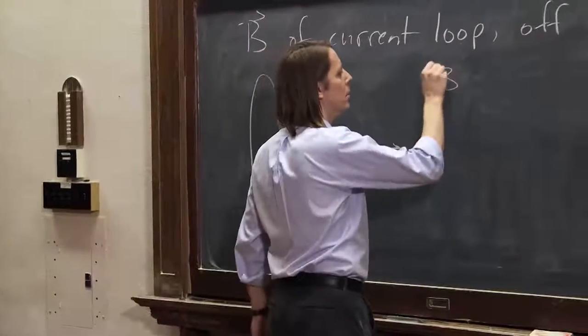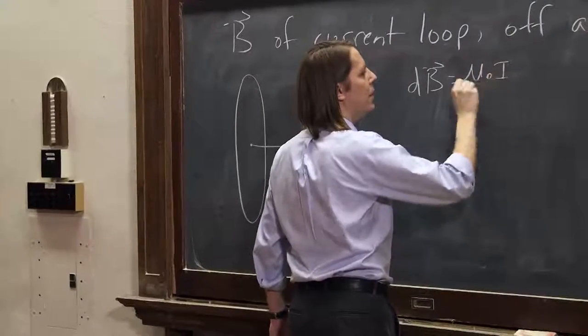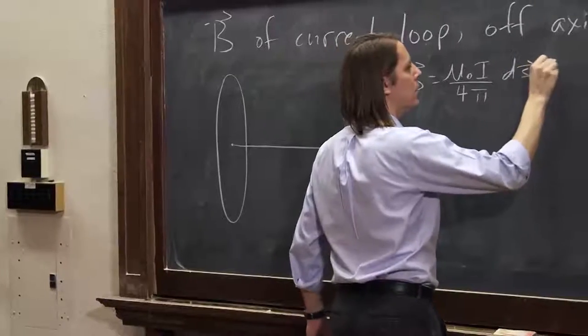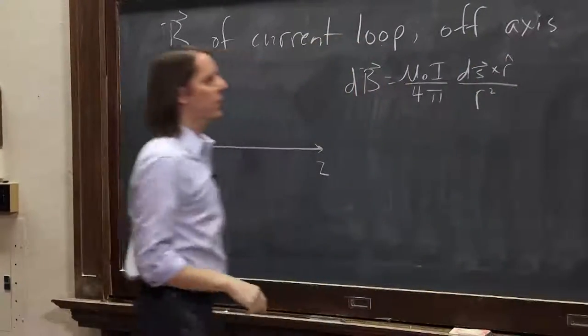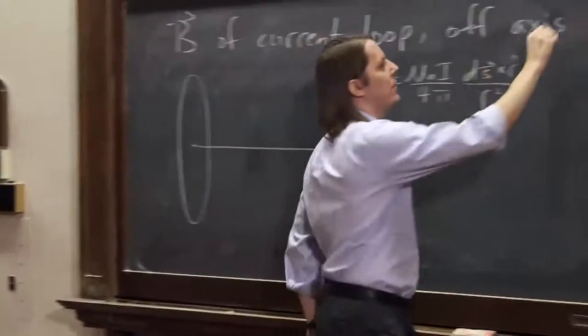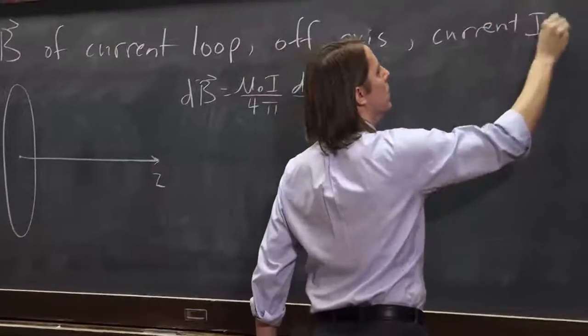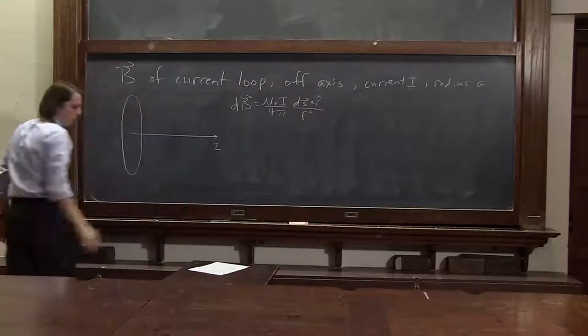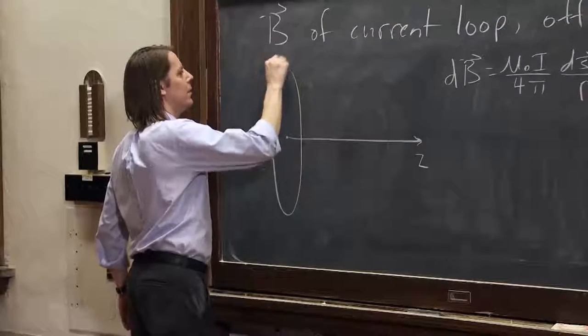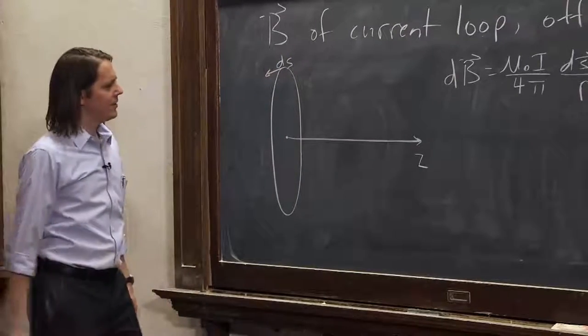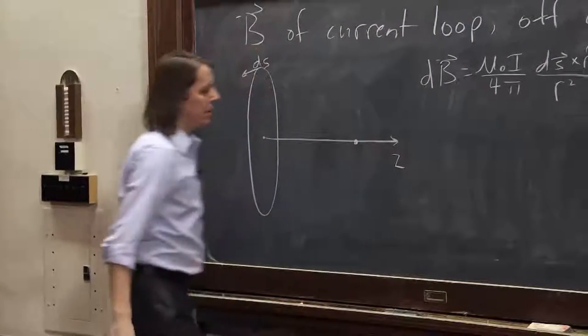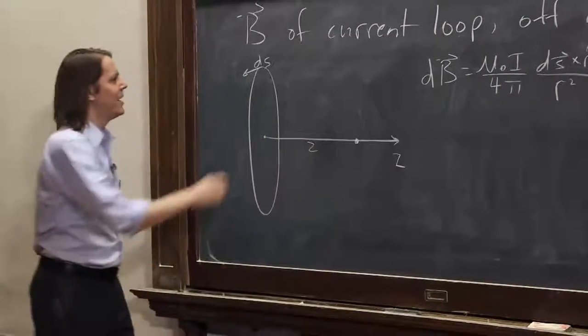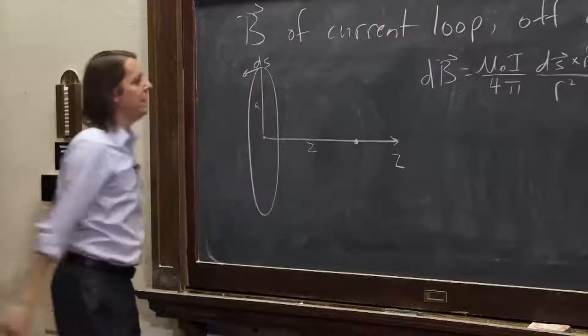Let's write our dB is mu naught I over 4 pi dS cross r hat over r squared. And we'll assume the same thing. It has a current I and radius A. So let's imagine a dS right here on top like that. dS is like that. We want to pick a position at some distance Z from the thing. So we're at a position Z like that. And we have a radius A right there.